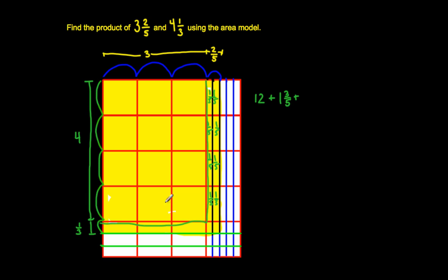I've now multiplied 4 times 3 and 4 times 2 fifths. Now I'm going to multiply 1 third times 3. 1 third times 3 goes from here to here — each of these sections is a third, so I have 1 third plus another third plus another third. 1 third times 3 is 3 thirds, and 3 thirds make 1 whole. So I have plus 1 whole here.